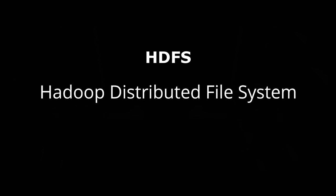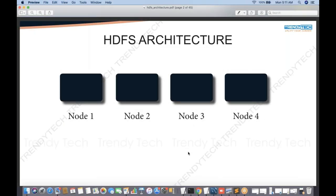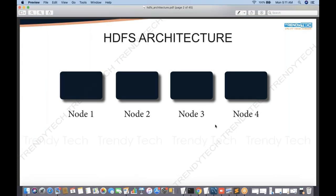A system can be designed in two ways: monolithic and distributed. However, all good big data systems are based on a distributed architecture to make them scalable. HDFS is also a distributed system. Here I have showcased a four-node cluster — a cluster is made of nodes, and a node is nothing but one server.